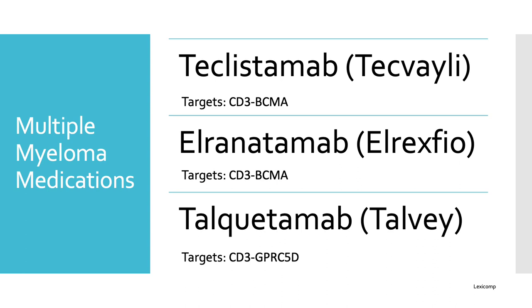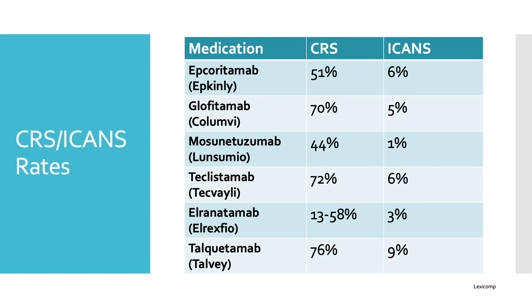Studies are ongoing for both the multiple myeloma and lymphoma medications. Right now they're towards the later lines of treatment, but studies are ongoing to see where they truly fall in therapy and they could potentially be used in earlier lines. This chart shows the overall CRS and ICANS rates from each of these medications known so far. Tecvayli and Talvey have the highest rates of CRS and ICANS, though all of these medications have a fairly high chance of CRS. These reactions are most likely to occur during cycle 1, though the exact timing depends on the specific medication.